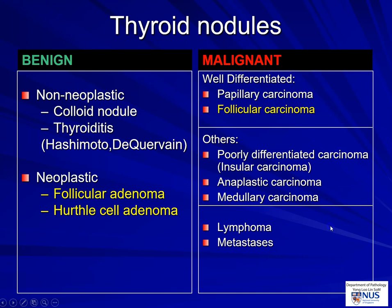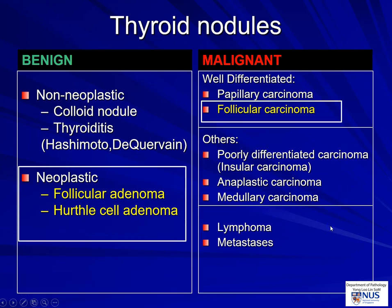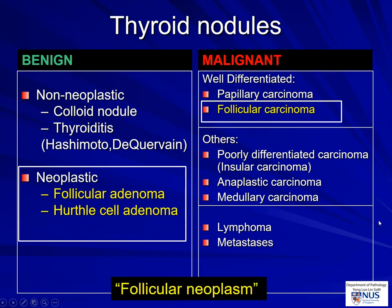It's very important to understand upfront that there are some entities that we cannot diagnose on cytology because of the requirement to examine for capsular or vascular invasion. These are highlighted here, so they will all be subsumed under the category of follicular neoplasm. I also want to briefly mention another entity, the NIFTP, which will most of the time come under follicular neoplasm or other indeterminate categories on cytology.